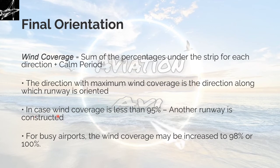In case wind coverage is less than 95%, another runway is constructed. Meaning, if you are getting the wind coverage less than 95%, this means that the wind is not in favor of landing and takeoffs. So you have to find another runway orientation to get this 95% usability factor. For busy airports, the wind coverage may be increased up to 98% or 100%.